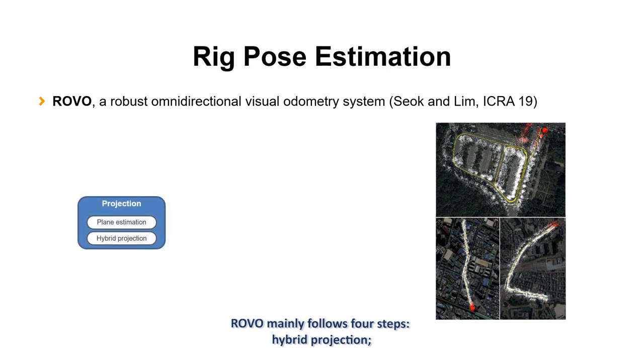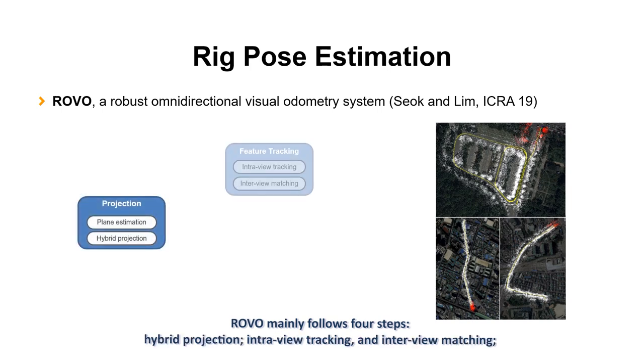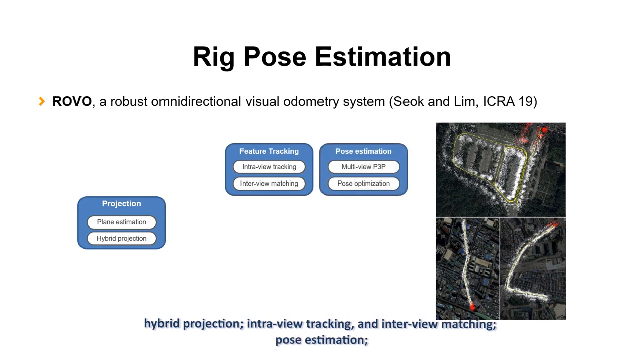ROVO mainly follows four steps. Hybrid projection. Intra-view tracking and inter-view matching. Pose estimation. And joint optimization.